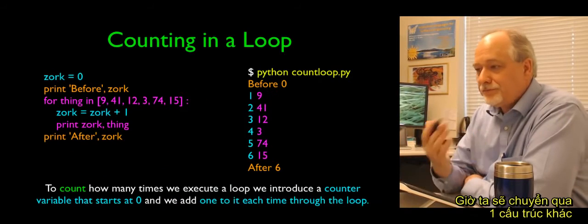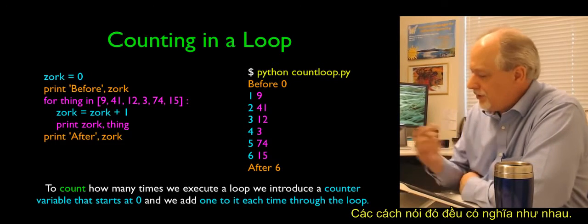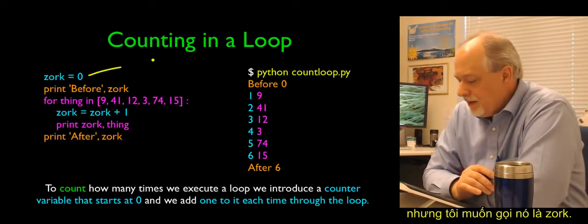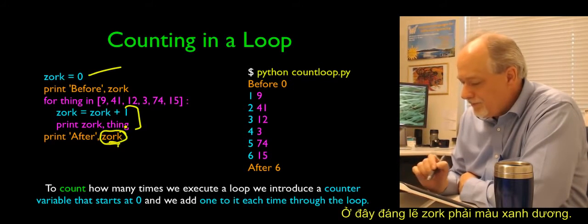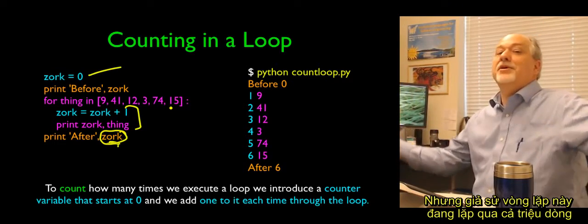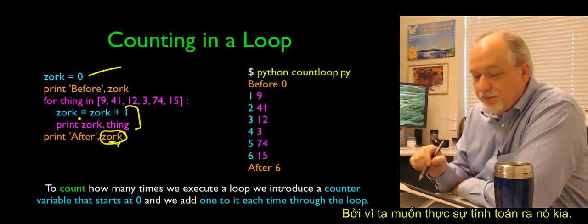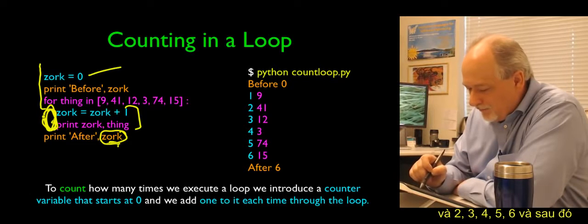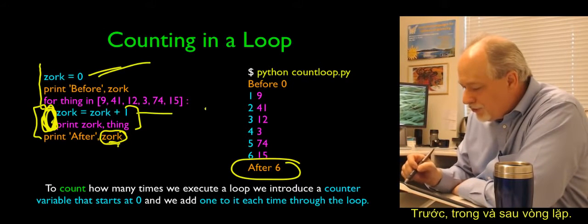Now counting — how many times does the loop execute? The pattern is simple: start a variable called zork (better name: count) at 0. Then in the loop, add 1 to zork each time. At the end, zork is the total count. Assume this loop is going through a million lines in a file. Zork starts at 0, becomes 1, 2, 3, 4, 5, 6 — then we've run out of items and print 6. The pattern: before, during, and after. Zork is the count-so-far, and at the end it becomes the total.